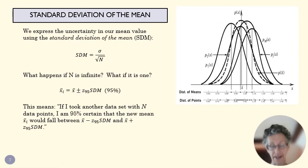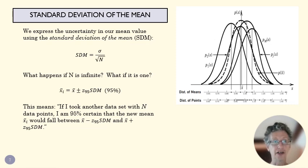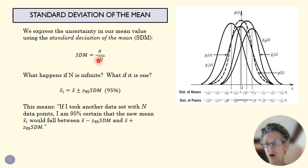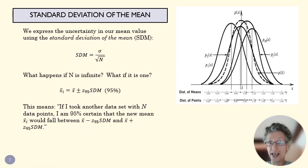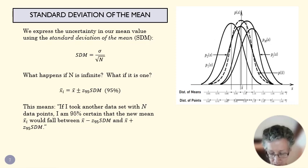The standard deviation of the mean is going to be smaller than our standard deviation, and that's what this equation says: we divide sigma by the square root of N. This number is always going to be smaller. As a thought experiment: if you took an infinite number of data points, the standard deviation of the mean would be 0 because you'd have complete knowledge and the true value. If N is 1, the standard deviation of the mean equals the standard deviation.